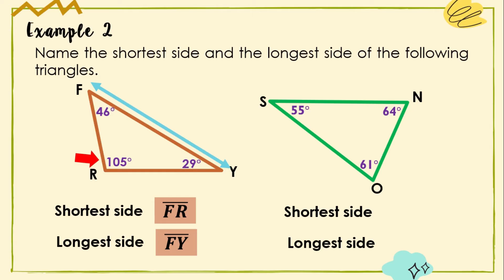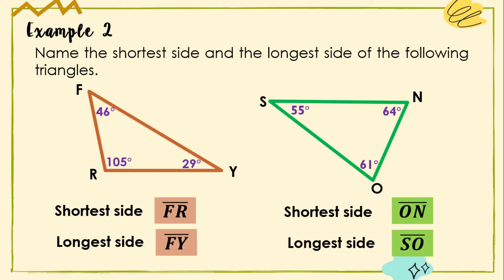Next, triangle SON has Angle S = 55°, Angle O = 61°, and Angle N = 64°. Its shortest side is ON since it is opposite the smallest angle S. The longest side is SO since it is opposite the largest angle N.